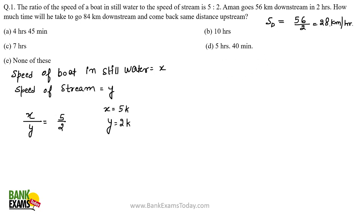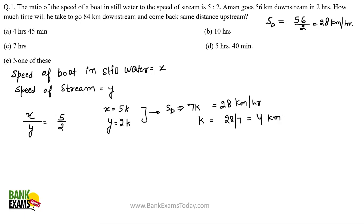Since the speed in downstream is given as 28 km/h, and downstream speed equals x + y = 5k + 2k = 7k, we get 7k = 28, so k = 4 km/h. Therefore x = 20 km/h and y = 8 km/h. The speed of upstream (su) = x - y = 20 - 8 = 12 km/h.